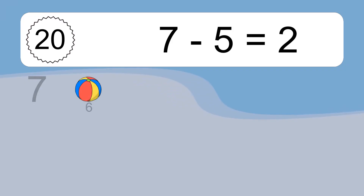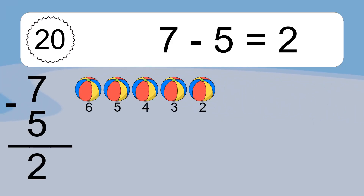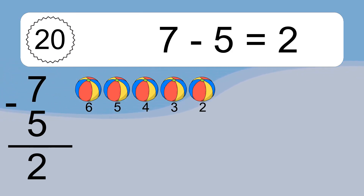7 minus 5 equals what? 7 minus 5 equals 2. Let's count it: 6, 5, 4, 3, 2. See you.